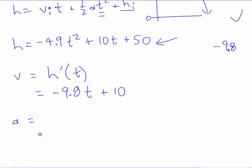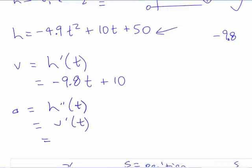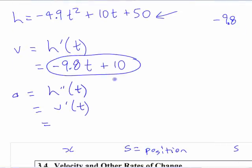If you want a function for the acceleration, you can either say it's the second derivative of time or it's the first derivative of velocity. But in either case, what is it here? Because the derivative of this, the derivative of that component is zero. That doesn't cause any change.